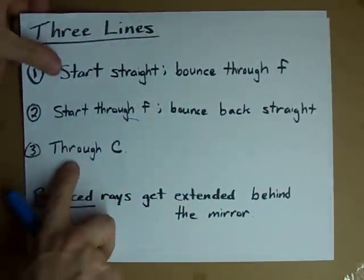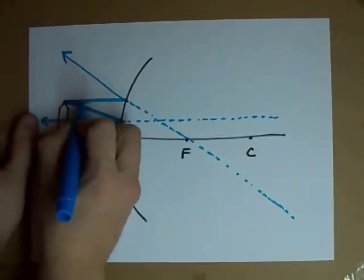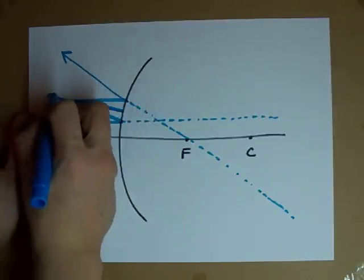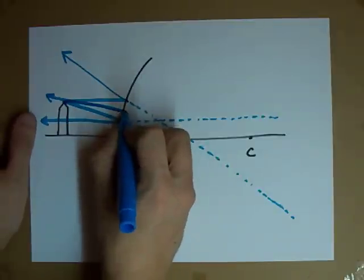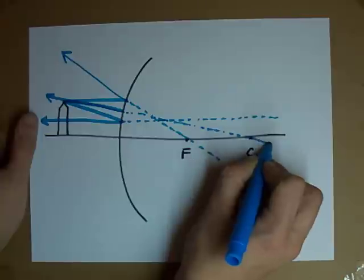The last one, the last line I want you to draw goes straight through C. So here we go. I'm going through C, I'm going through C. Aw, it didn't even work. I didn't get through. It's a mirror. I bounce off of it. But if I had continued, I would have headed this way, right along this dotted line.